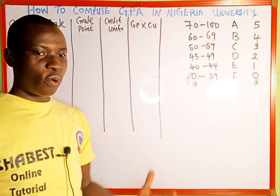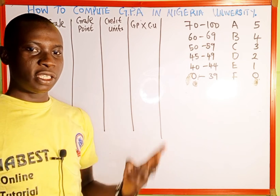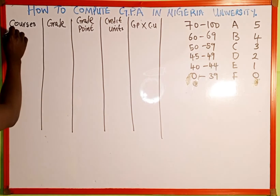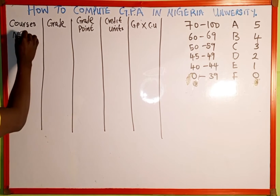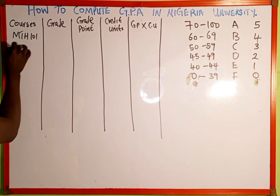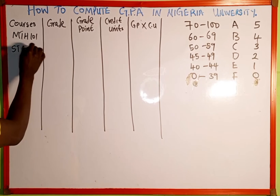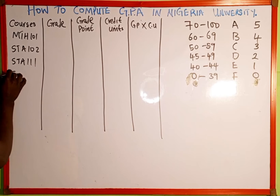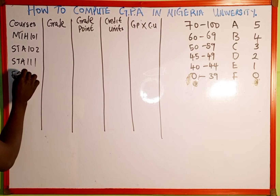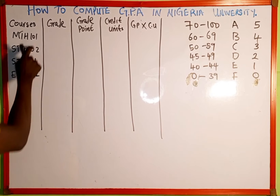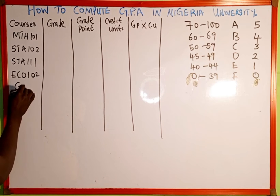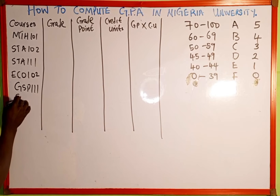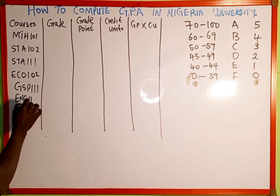Suppose a student registered six courses in a particular semester: MTH 101, STA 102, STA 111, ECO 102, GSP 111, and ENG 111.